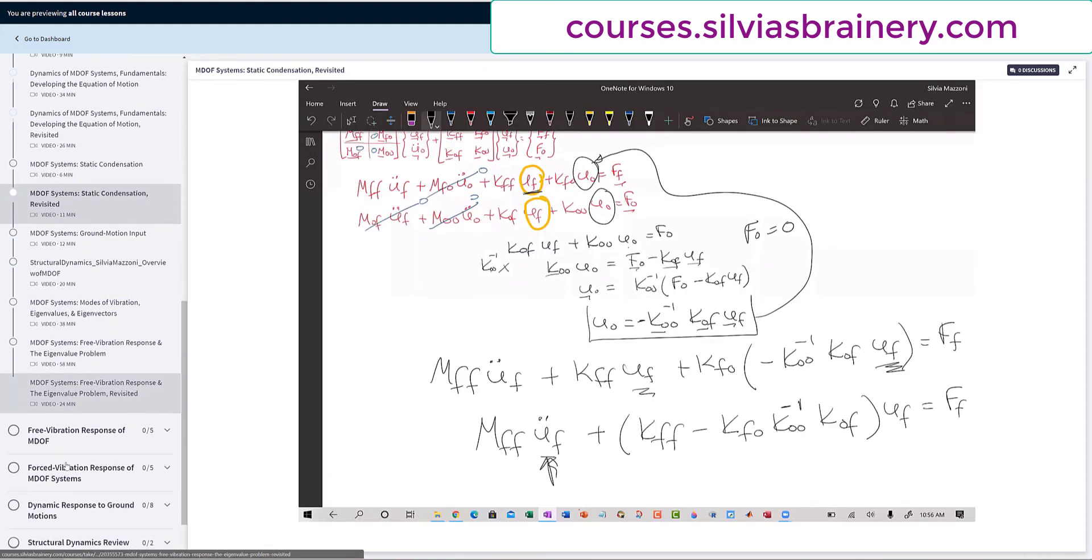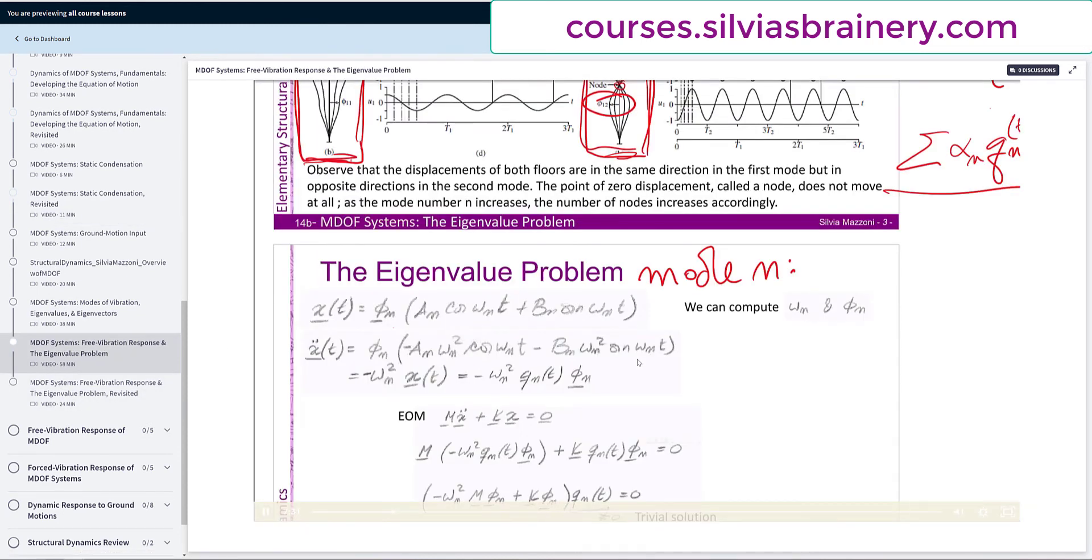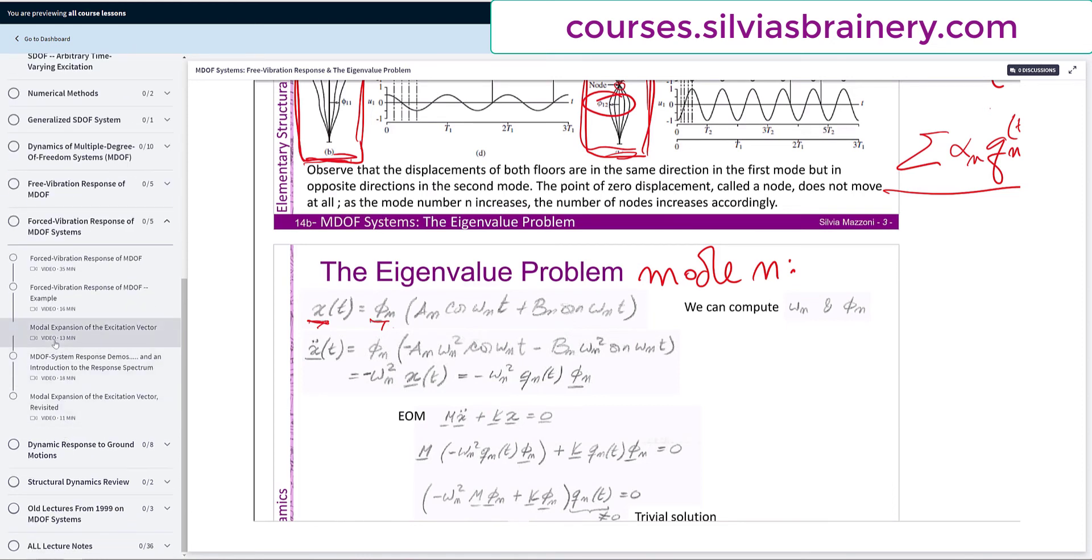This is important. Now what we've done is we have a p_i of n. So this is a vector - the distribution between the different degrees of freedom, or nodes.